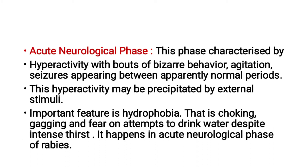Then the acute neurological phase. This phase is characterized by hyperactivity with bouts of bizarre behavior, agitation, and seizures appearing between apparently normal periods. This hyperactivity may be precipitated by external stimuli.